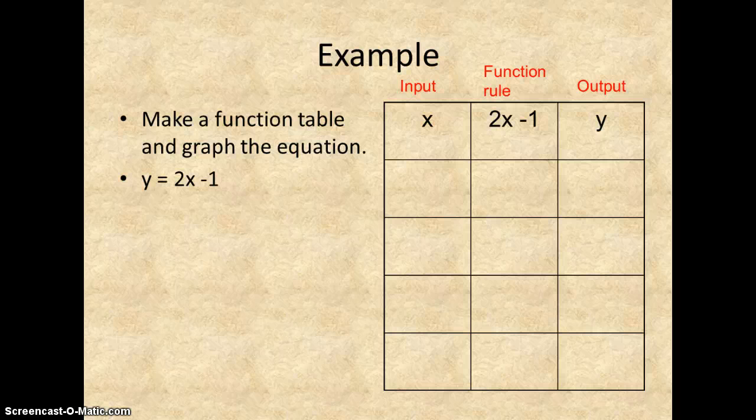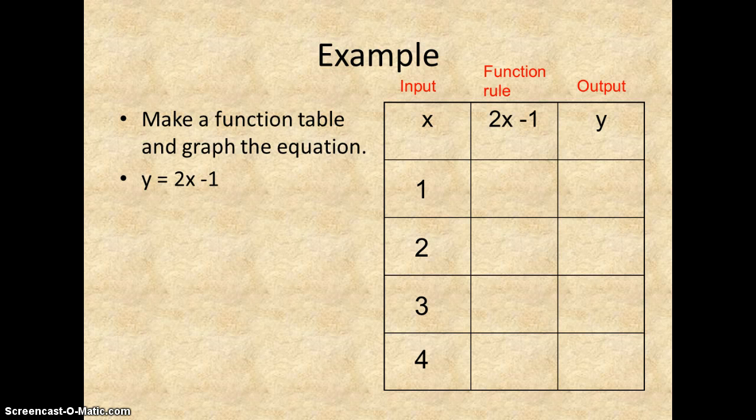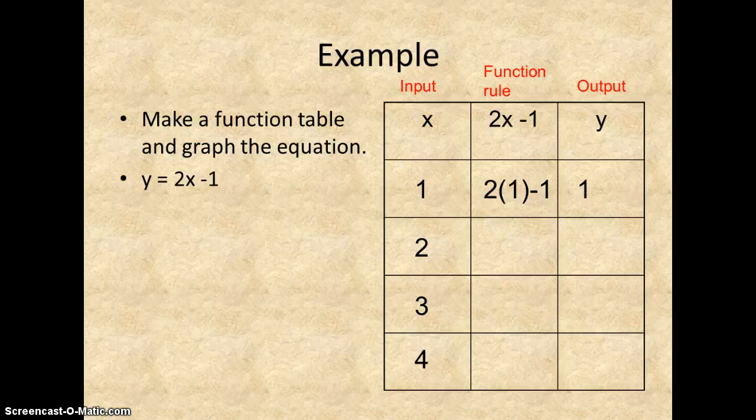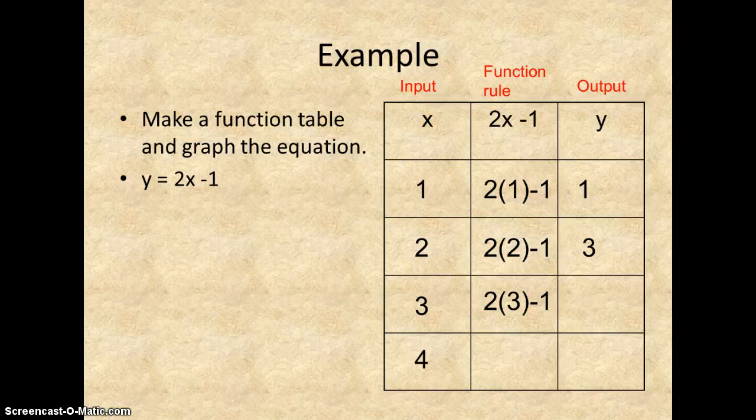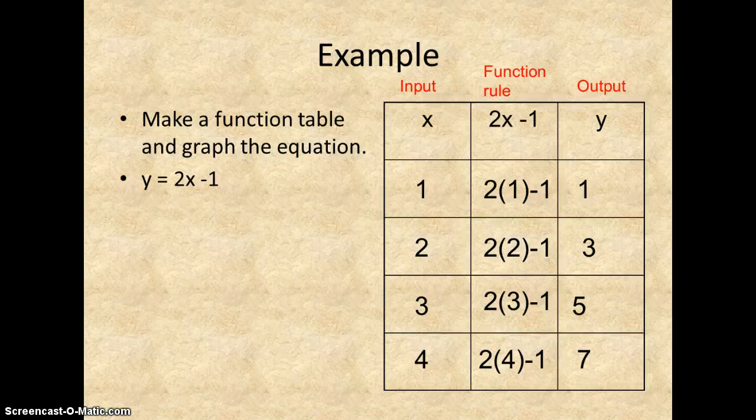So one other one. Here's our function. The function rule is 2x minus 1. We're going to pick 4 numbers again. And sometimes it depends on 4 numbers, 3 numbers. That's up to what the assignment chart gives you. So again, we're going to fill in what we know, we're going to solve it, and we're going to get our output. And from here, we're going to take these values and we're going to graph them as we go through this section.